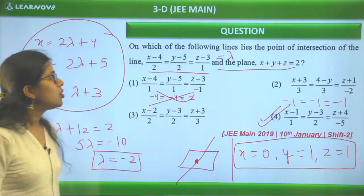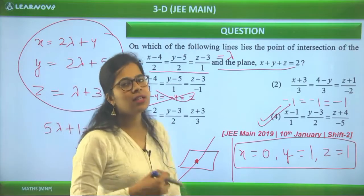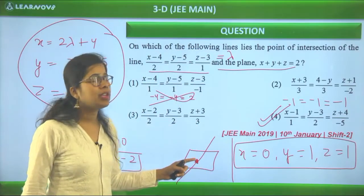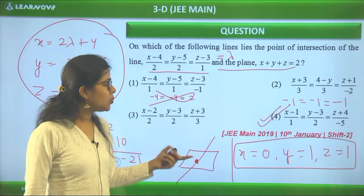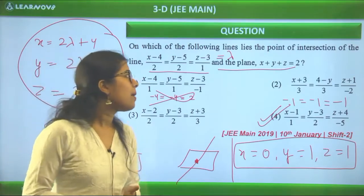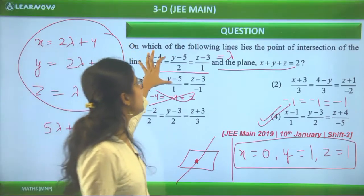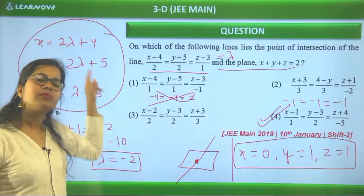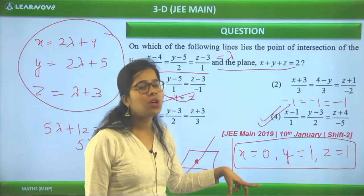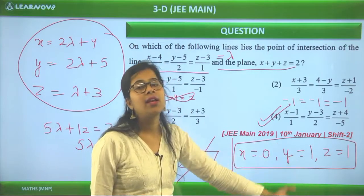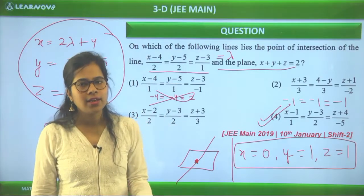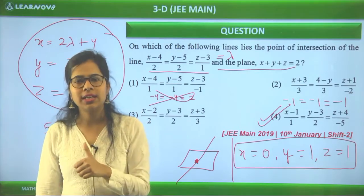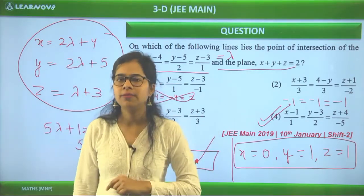This is a very simple question. The approach is: find the point of intersection of line and plane — put the line in parametric form with lambda, substitute into the plane equation to find lambda, then get the coordinates of the intersection point. Then check which option's line equation is satisfied by that point.